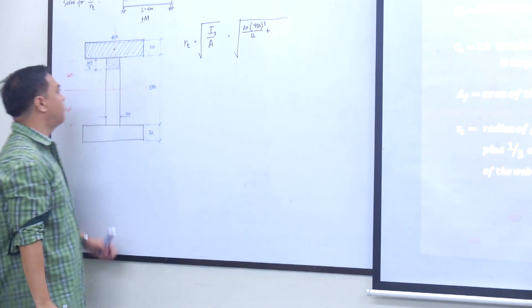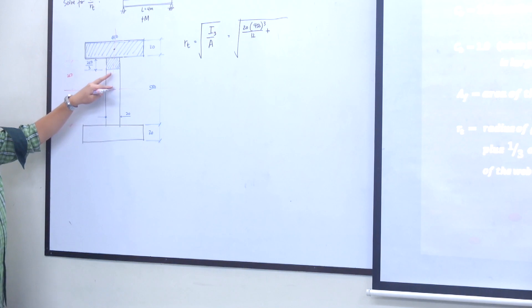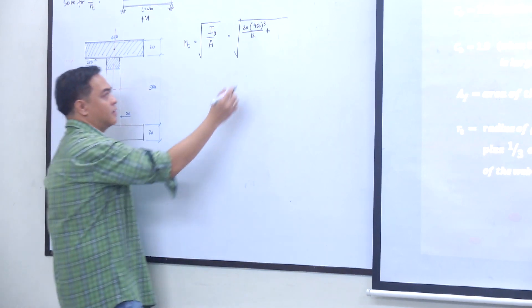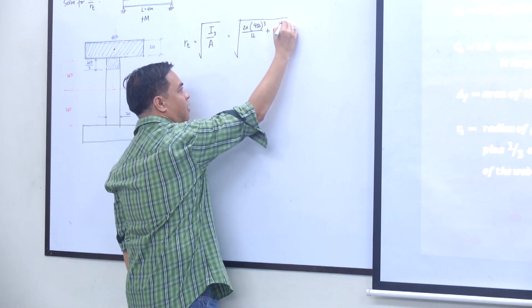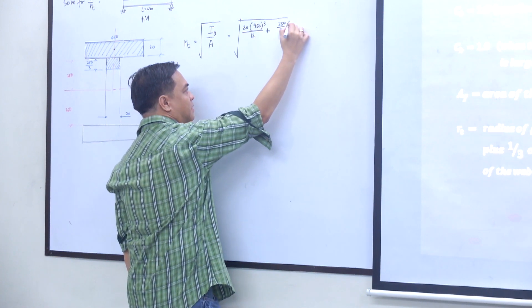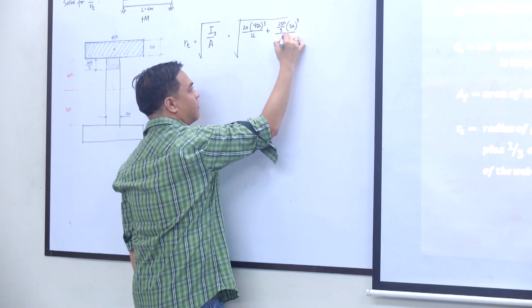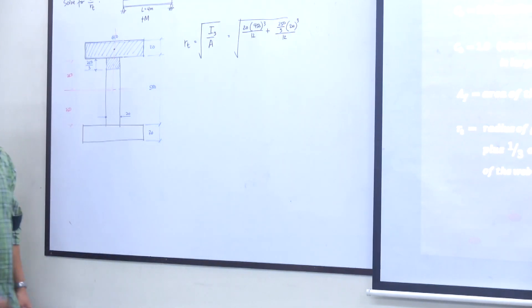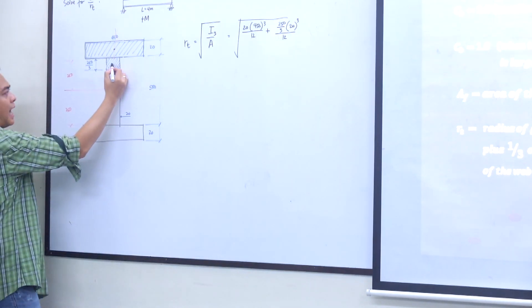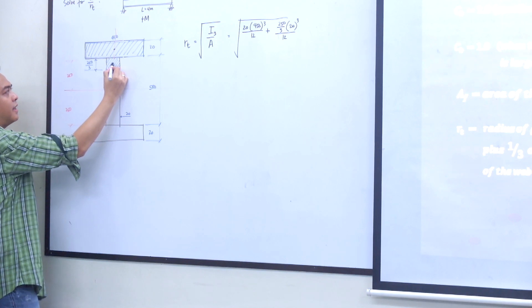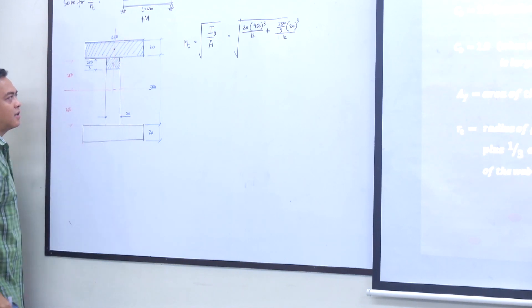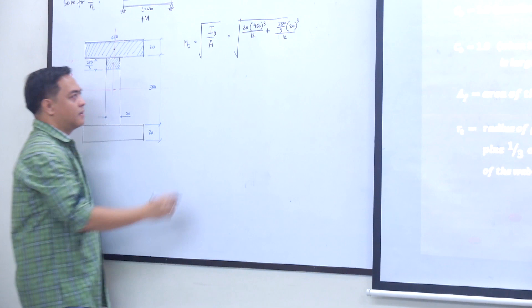What about for the compression web? 250 over 3 times 20 cubed over 12. You don't need to transfer that inertia anymore, because the local centroid coincides with the axis at the top of the web. That's it.